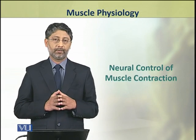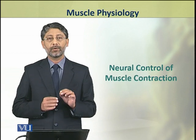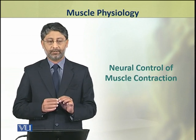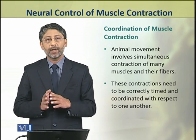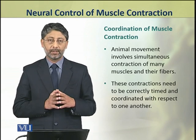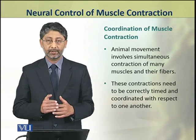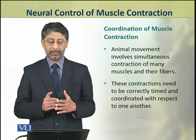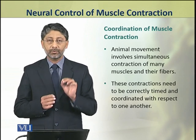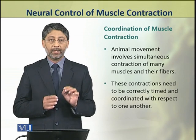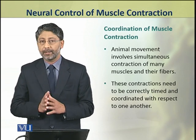In this topic we shall discuss the neural control of muscle contraction. Animal movement involves simultaneous contraction of many muscles and their fibers. These contractions need to be correctly timed and coordinated with respect to one another.